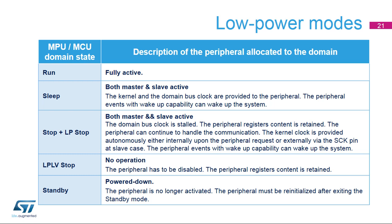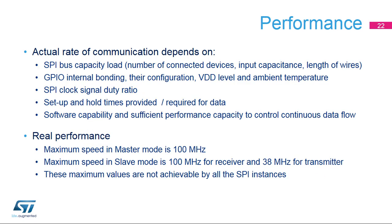The SPI performance depends mainly on the applied clock. At a minimum, the clock frequency should be twice the required communication frequency. The actual rate of communication can be decreased by application factors. The user has to consider SPI bus loads such as the number of nodes, the connection distance, the input capacitance, as well as the GPIO settings. Fast GPIO mode should be applied on the data and clock signals.